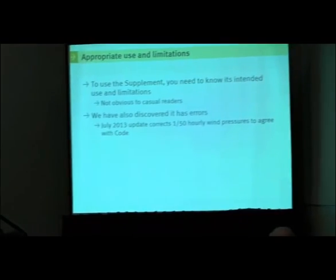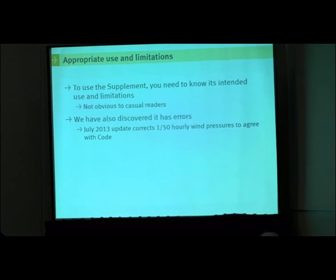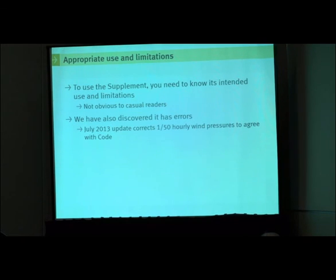We've also discovered that it has some errors. The environmental data — the hourly wind pressures and driving rain wind pressures — in the 2009 supplement were from the 2005 code. The supplement was published before the 2010 National Building Code, so that information got out of sync. The supplement was republished in July 2013 with corrected data. However, the building code in BC only recognizes...